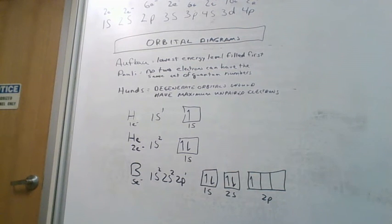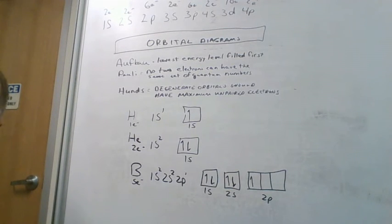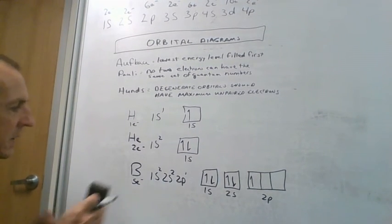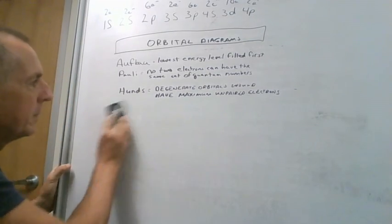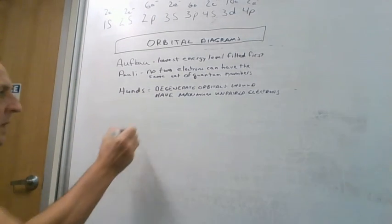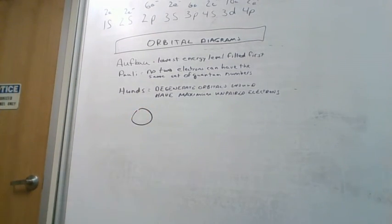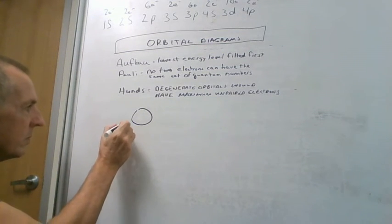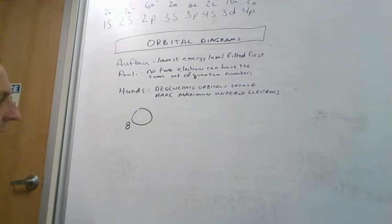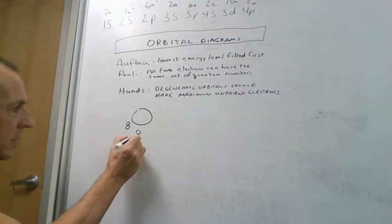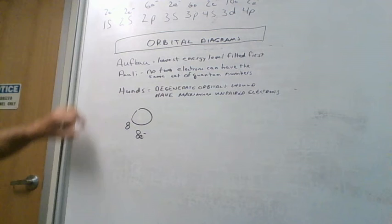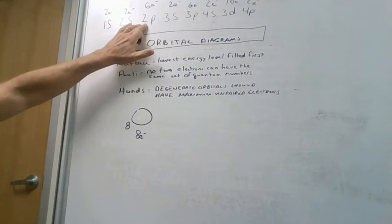If we go a little bit further, say we go all the way out to oxygen. We go to oxygen and now we have 2, 4, 6, 8—we're the eighth element. So we have eight electrons that we have to put out there.